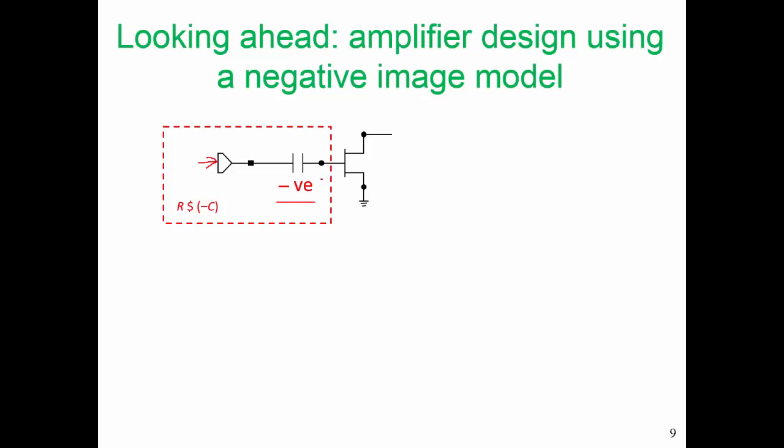Another way of looking at this problem is that if we look into the input of the transistor, we will see a capacitor. To cancel that capacitance, well the easiest way to cancel it is to have a negative capacitance with the same value magnitude. That resistance, well for maximum power transfer, we want this resistance to be the same as the series resistance looking into the transistor.